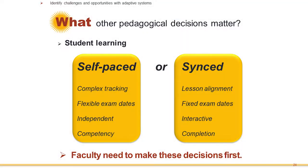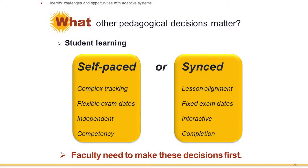On the self-paced side, students can work independently and you can encourage them to move ahead or remediate as needed. On the synced side, we're trying to encourage interactivity around the concept — going for depth as opposed to speed. In the synced model, we're asking students to go deeper, think harder, use higher-order thinking skills and do problem solving. Measurement differs too: self-paced measures mastery or competency; the traditional model measures whether they completed the course and passed the exam.